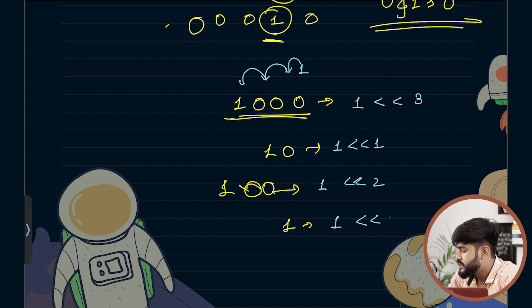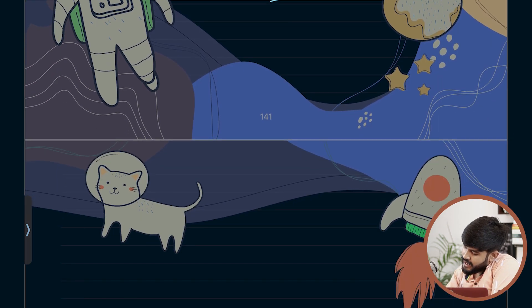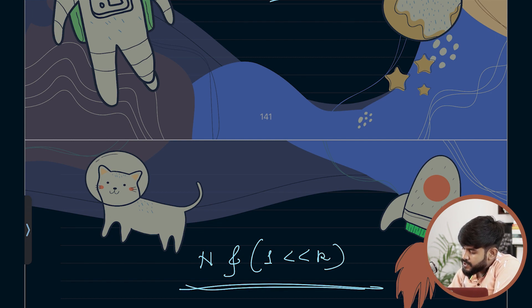This is nothing but 1 left shifted by 0, this is 1 left shifted by 1, this is 1 left shifted by 2. So what I can do is simply have the number and do an AND with 1 left shift with the value that I want to check.